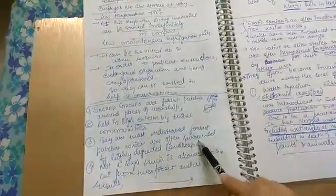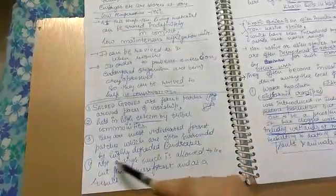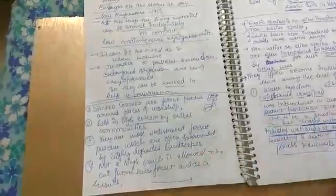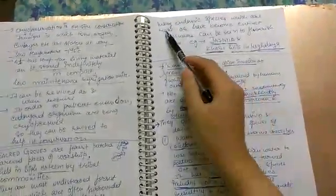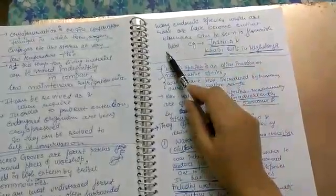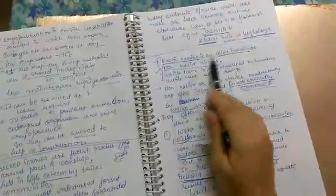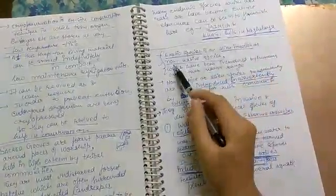Sacred groves are forest patches around places of worship held in high esteem. Many endemic species which are rare or have become extinct elsewhere can be seen flourishing here, like in the Khasi hills in Meghalaya.